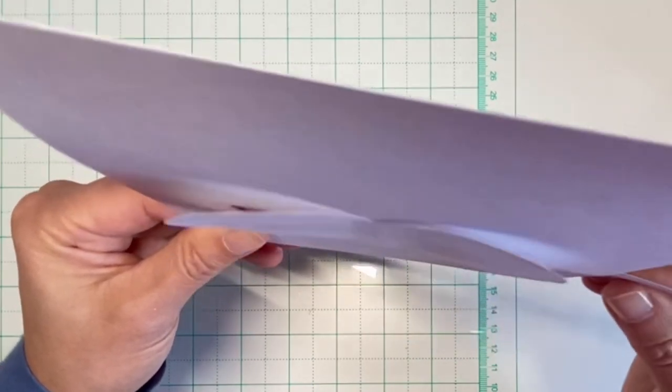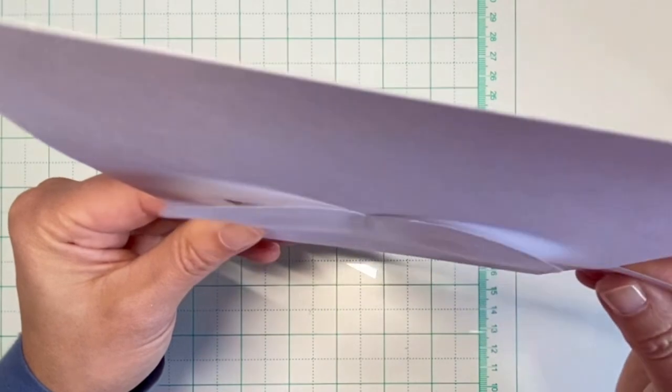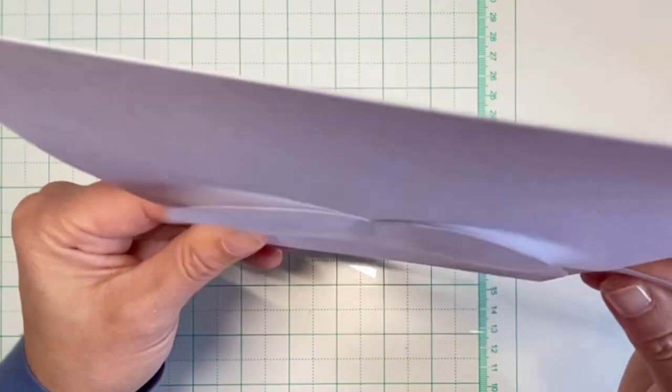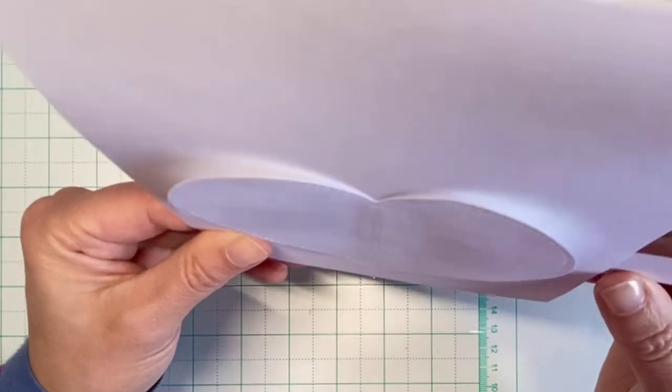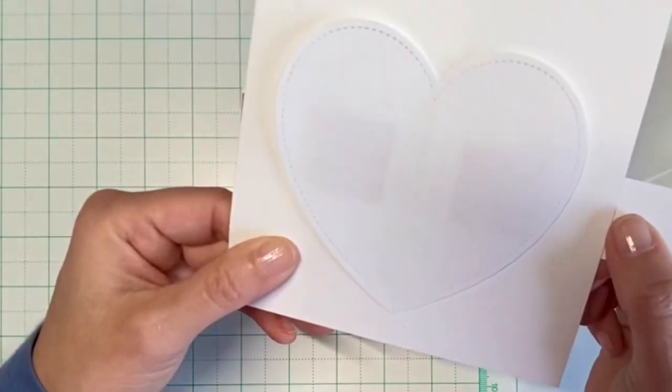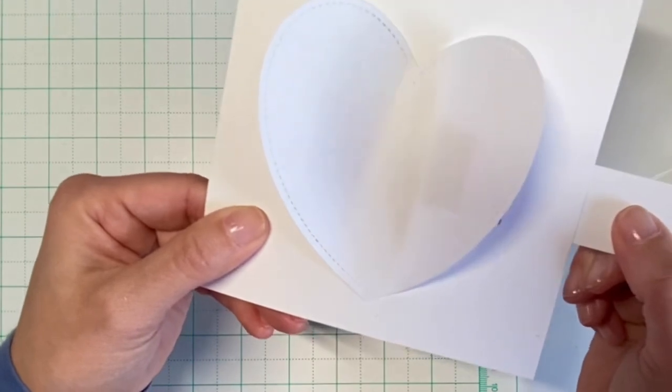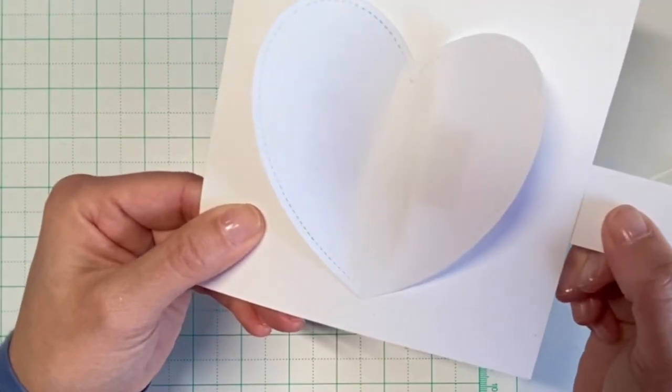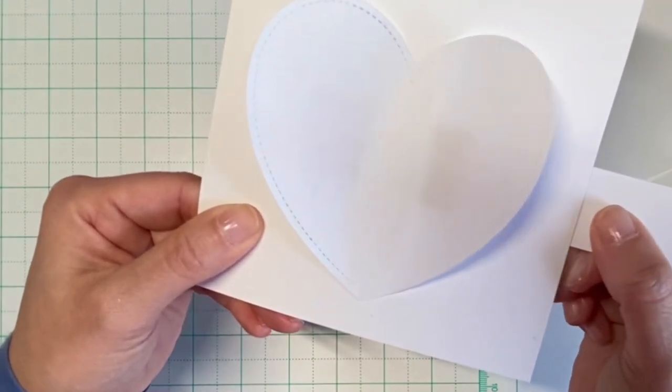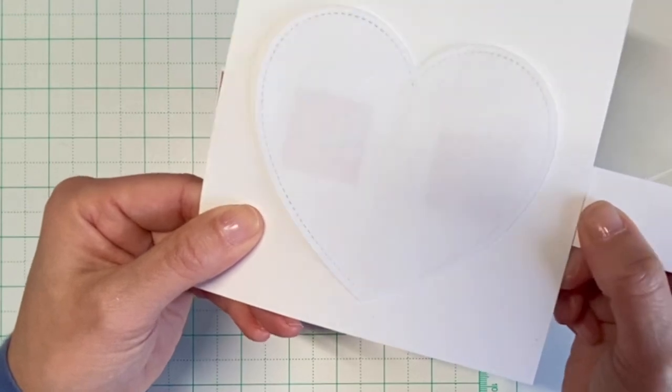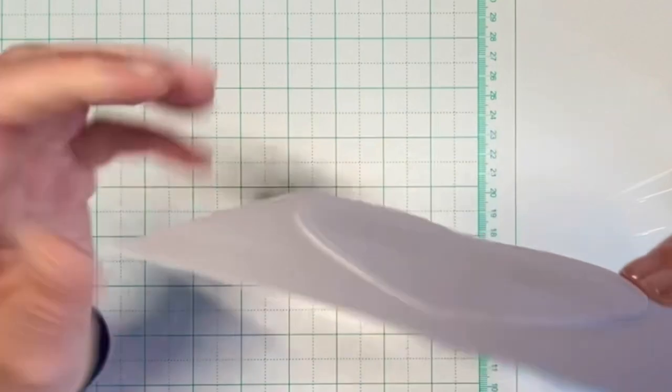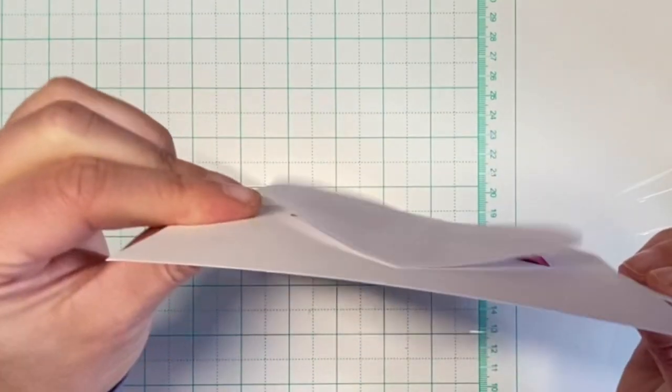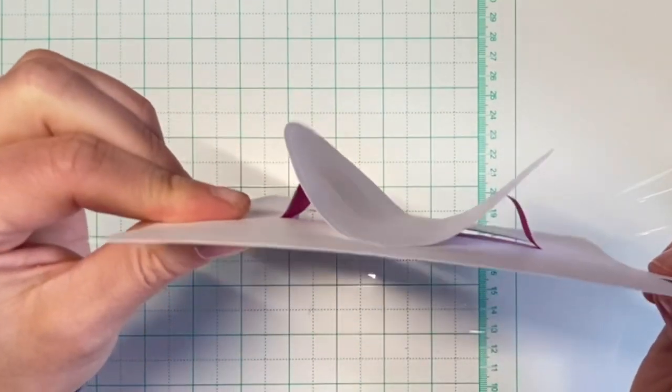You need to check what weight of acetate you want to use because if it's too flimsy it won't be able to fulfill its task, and if it's too heavy it might get too hard to pull the tab. So check what you have and if it works. If your acetate is too low weight you can double it up.